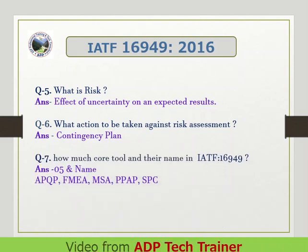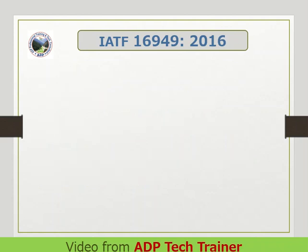Question 7: How many core tools are there in IATF 16949, and what are their names? Answer: 5, and their names are APQP, FMEA, MSA, PPAP, SPC.